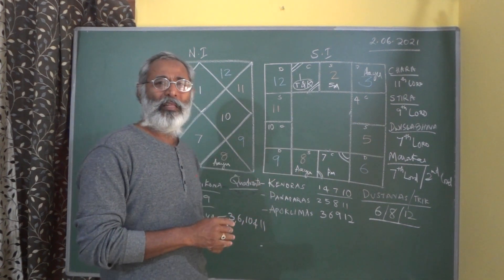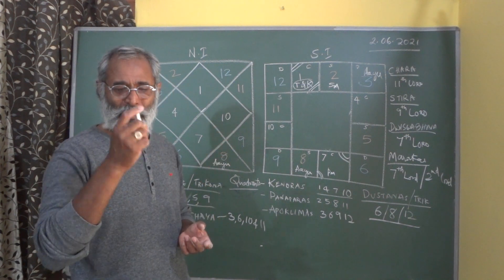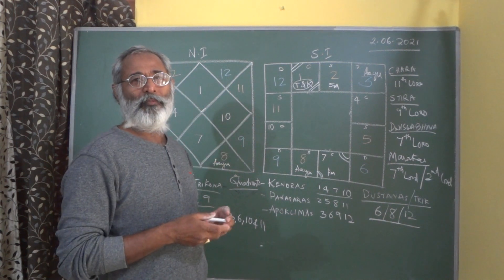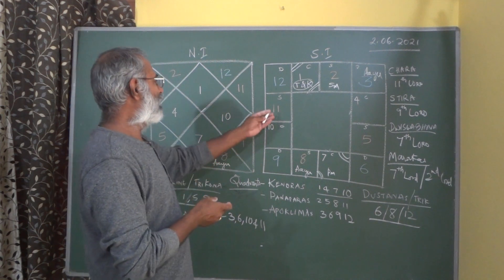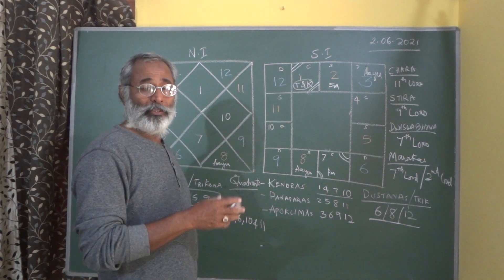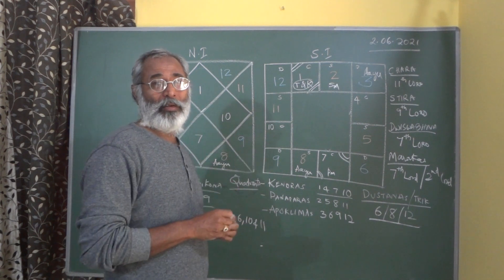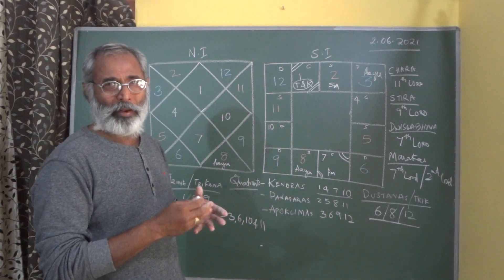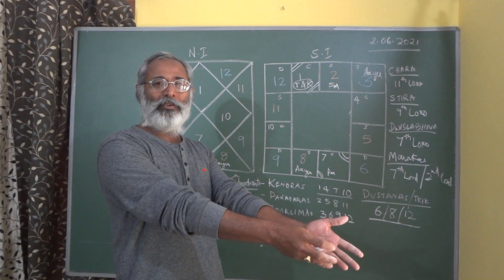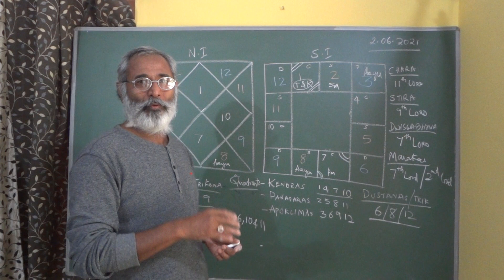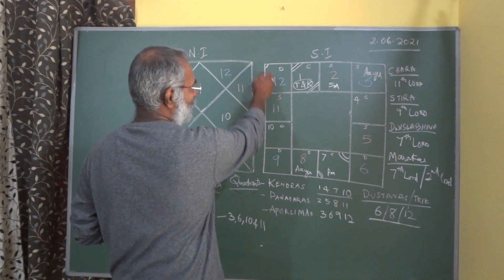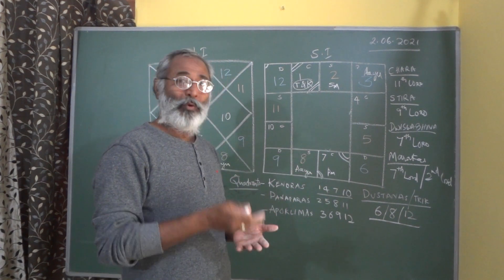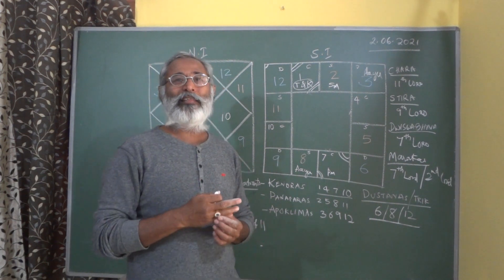There is also a Dosha called Ashtamasthana Adipati Dosha — the 8th Lord acquires Dosha. But Sun has an exemption: though it becomes the 8th Lord for Capricorn Lagna only, it will not show Ashtamasthana Adipatya Dosha. A student was asking: when Saturn is in the 11th house for Aries, it is a good placement because it is in Mulatrikona, but it is also a Badaka — 100% correct.